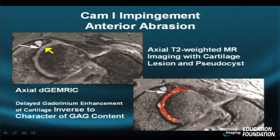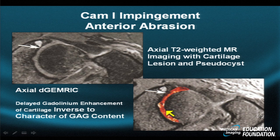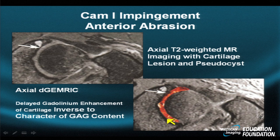Here's an axial T2-weighted MR showing some subtle irregularity and perhaps a little hyperintensity with a subcortical pseudocyst, but the true scope and nature of the hyaline cartilage disease cannot really be ascertained until one looks at the dGEMRIC examination with intravenous contrast injected, seeing the avidity of the gadolinium for most of the cartilage throughout. This avidity indicates marked depletion of the GAG or glycosaminoglycan content of the cartilage, allowing the gadolinium to diffuse inward.